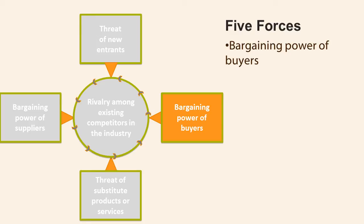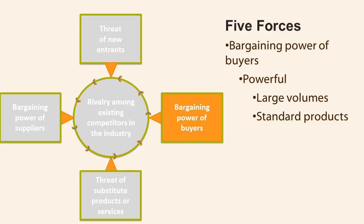The fourth force is the bargaining power of buyers. A buyer group is powerful when customers purchase in large volumes — for example, government purchases of large quantities of office products like paper. If the products are standard, buyers can play one company against another, as in the trucking industry. When the product represents a significant fraction of the customer's total cost, buyers are likely to shop for a more favorable price; if it represents a small fraction, buyers are usually less price sensitive.